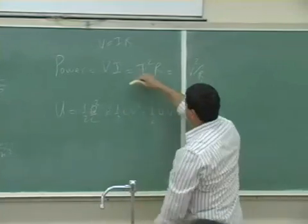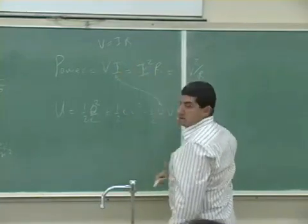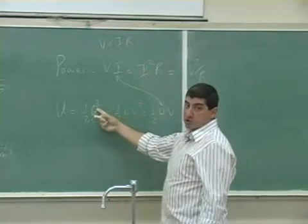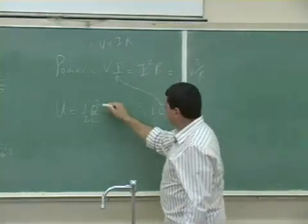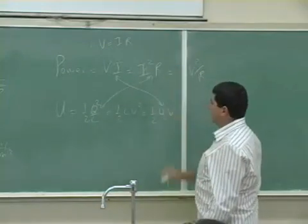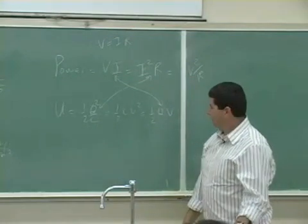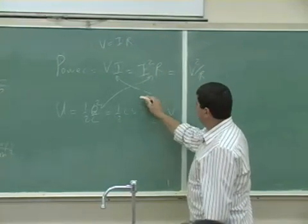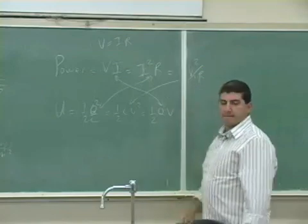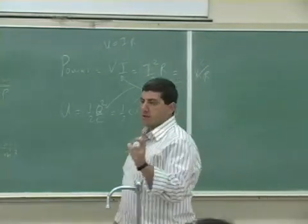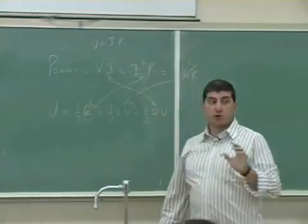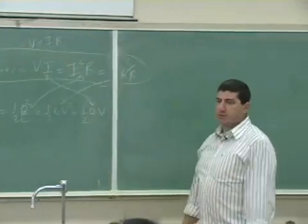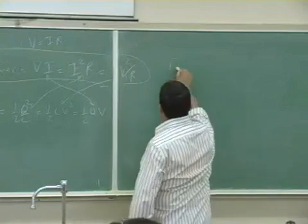These three power equations are analogous to the three energy equations for capacitors. I²R corresponds to Q² over C — current is analogous to charge and resistance is analogous to one over capacitance. V² over R corresponds to CV². Depending on the situation, one of these three forms may be more convenient than the others.